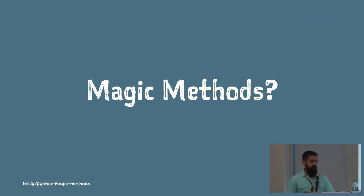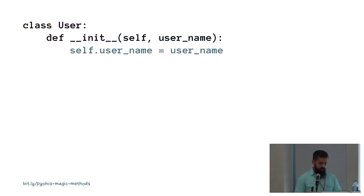So what are magic methods? Magic methods are methods which start with a double underscore in Python, and for this reason you'll hear them referred to as dunder methods as well. You'll likely use some of these already — for example, you'll likely use the dunder init magic method to initialize a class. Here's a simple class where we initialize a user object with a user name.